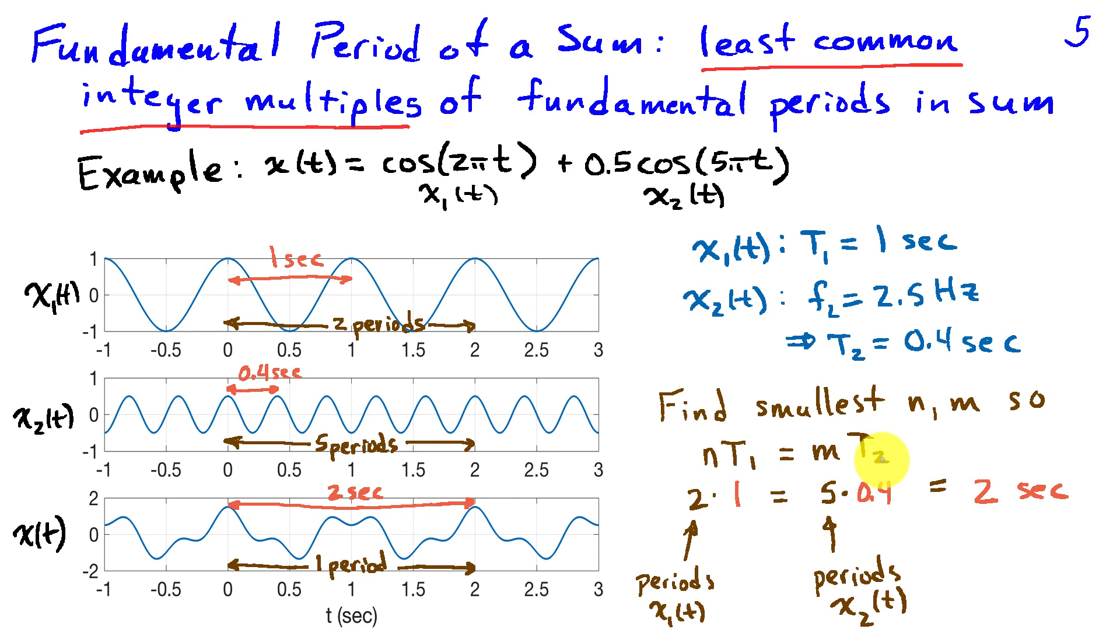So substituting t1 and t2, I have 1 for t1, 0.4 for t2. I see that if I multiply 1 by 2 and 0.4 by 5, I end up with the same number or two seconds.